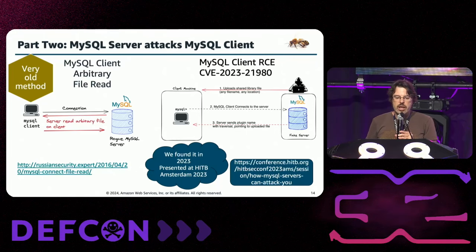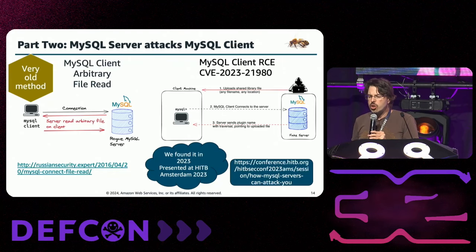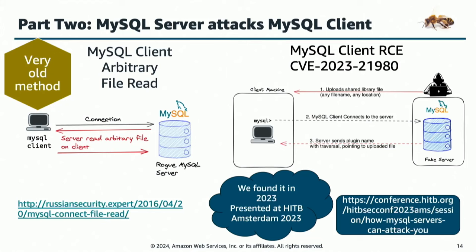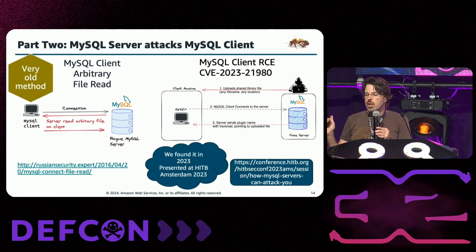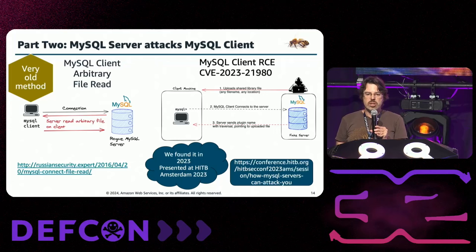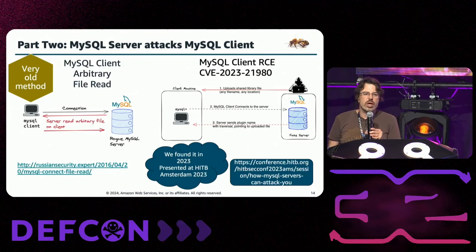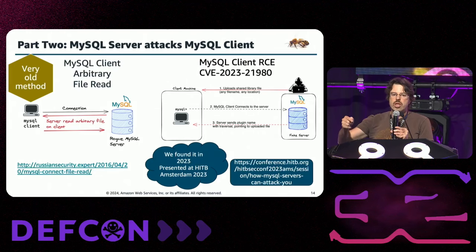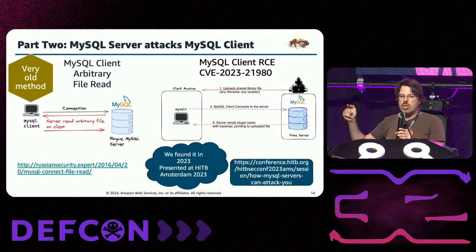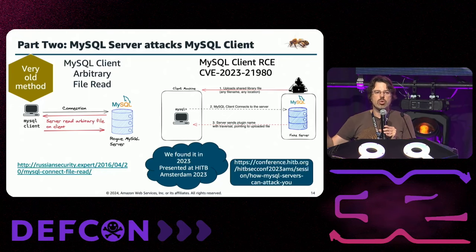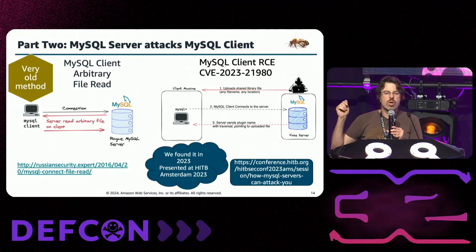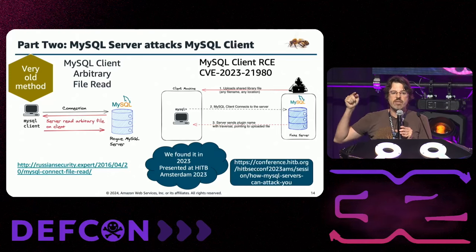MySQL server attacks MySQL client — this is how it works. There are two things here. First, we have MySQL client arbitrary file read: we create a server, the client connects to it, and the server requests a file, allowing us to read arbitrary files from the client. Second, the one we found last year and presented at HackerBee: the prerequisite is that you need to have a shared library uploaded to the client first. Then, when a connection is established, you can trick the client connection into executing your shared library — you just need that file to exist on the client.